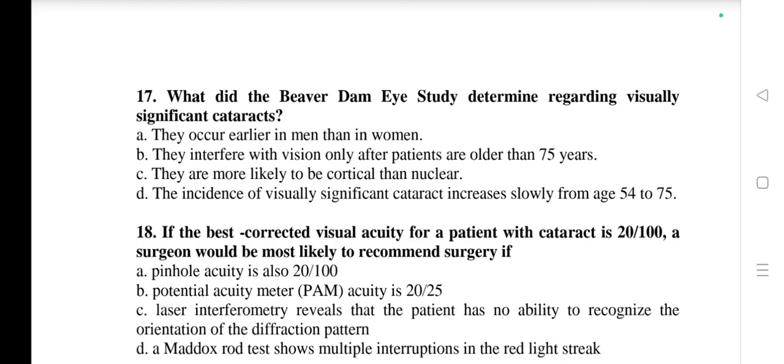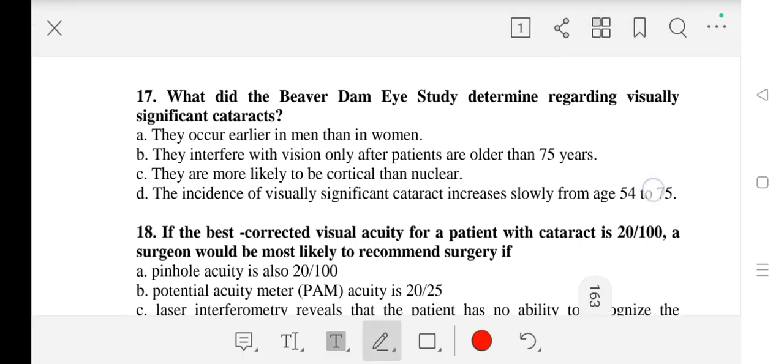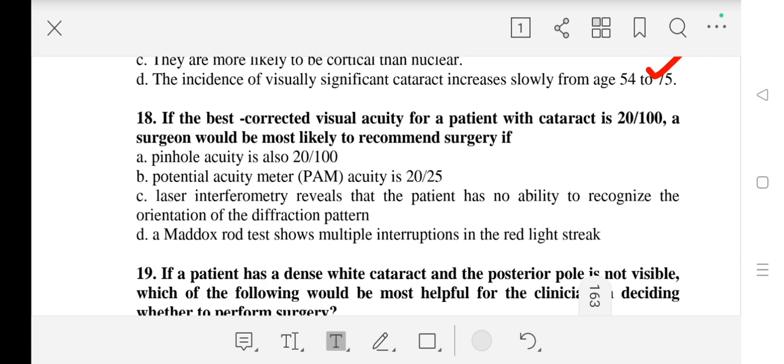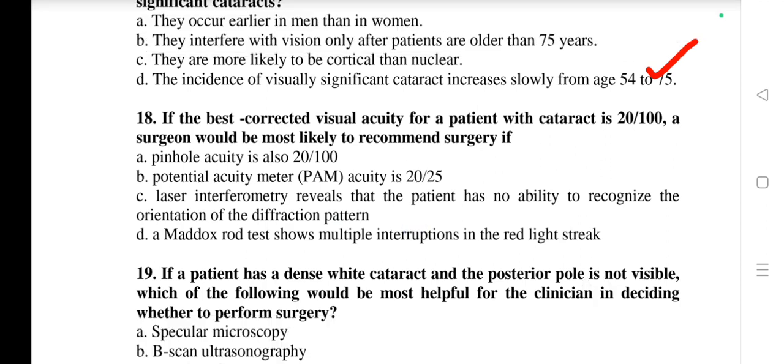Question number 17: What did the Beaver Dam Eye Study determine regarding visually significant cataract? Our correct answer is D - the incidence of visually significant cataract increases slowly from age 54 to 75. Question number 18: If the best corrected visual acuity of a patient with cataract is 20/100, a surgeon would be most likely to recommend surgery if the correct answer is B - potential acuity meter (PAM) acuity is 20/25.